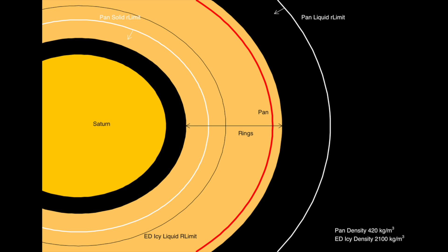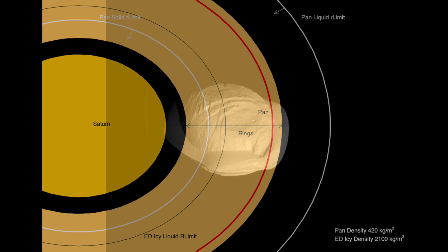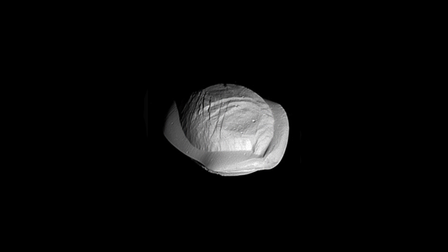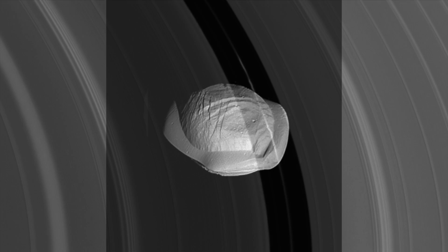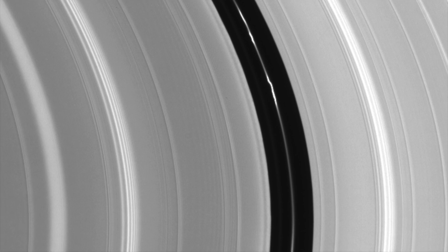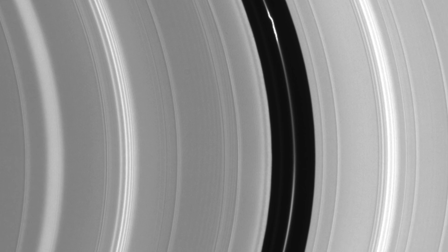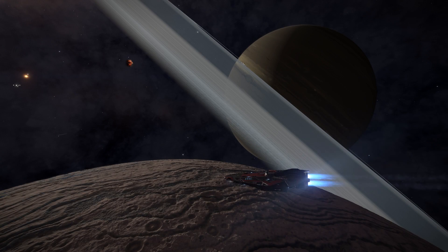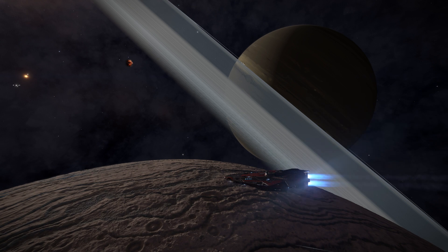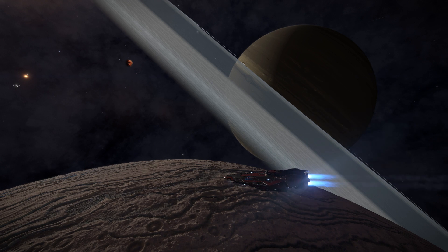Pan accretes material from the ring, and as such is not spherical at all. If we assume the outer ring is the liquid limit, and calculate the density, we produce a value of approximately 800 kilograms per cubic meter. We can feed this number into the solid limit equation, and it might not be too much of a surprise, but we actually get the distance that corresponds to the innermost major ring. This density also points to Saturn rings being mostly made of ice.